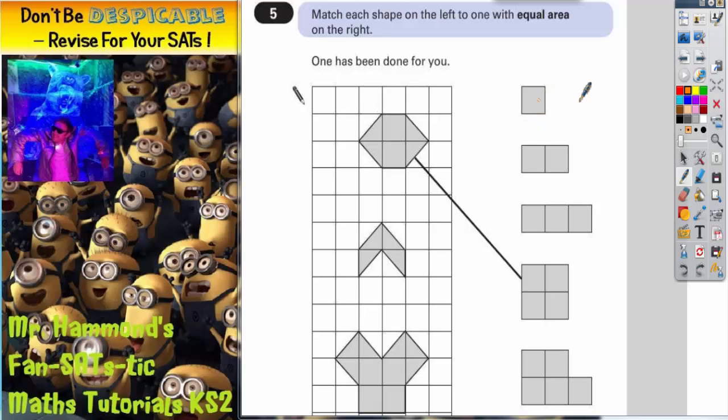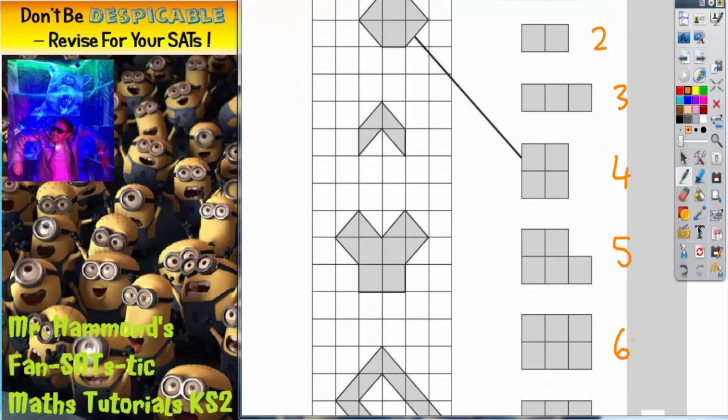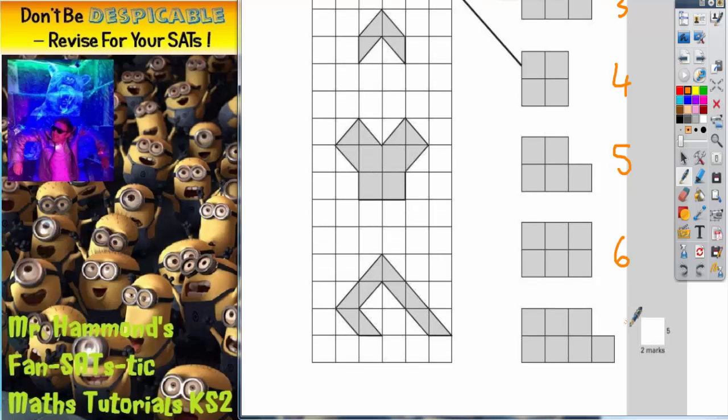So this first shape is one square, so it has an area of one. This has got an area of two squares, three squares, four squares, five squares, and six squares, seven squares. So that's nice and easy.